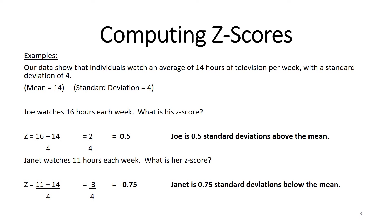Z-scores are no longer in the original units of the variable — in this case, no longer in hours of television. They are now in standard deviations above or below the mean. That's what a z-score tells us: are you above or below the mean, and how many standard deviations? Looking at Joe, he had a z-score of 0.5, meaning Joe is 0.5 standard deviations above the mean.